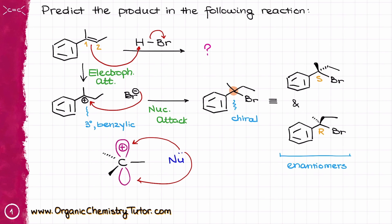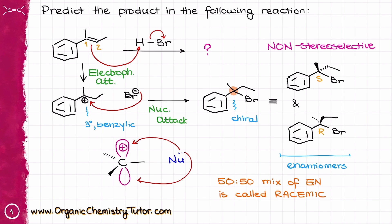Because we do not have any factors in our molecule or reaction that would make one product more favorable than the other, we say that this reaction is non-stereoselective, meaning we get roughly a 50-50 mixture of both possible stereoisomers. We have two enantiomers, and a 50-50 mixture of two enantiomers is called a racemic mixture. Importantly, the term racemic is only applicable to the 50-50 mixture of enantiomers — not a mix of diastereomers or a chiral plus achiral molecule.